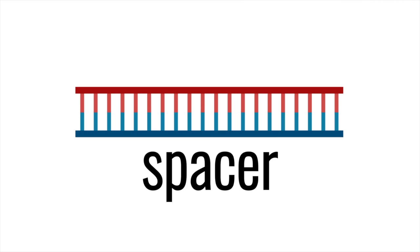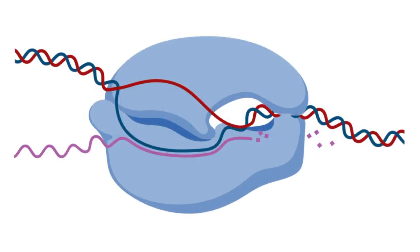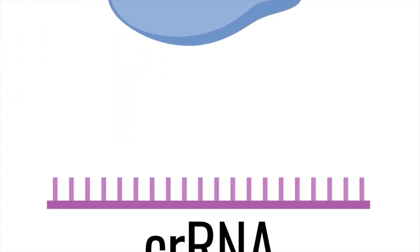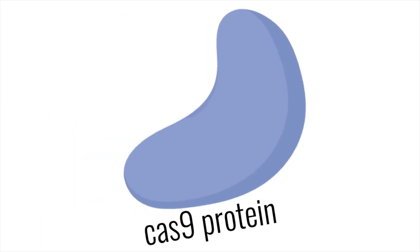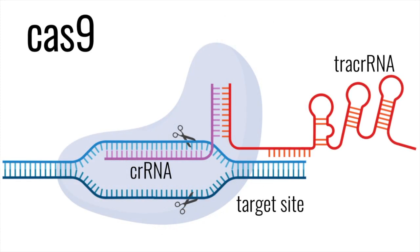Once a spacer is incorporated and the virus attacks again, a portion of the CRISPR is transcribed and processed into CRISPR RNA, or crRNA. The nucleotide sequence of the CRISPR acts as a template to produce a complementary sequence of single-stranded RNA. The Cas9 protein is an enzyme known to cut foreign DNA. The protein typically binds to two RNA molecules — CRISPR RNA and tracer RNA, also called transactivating CRISPR RNA.